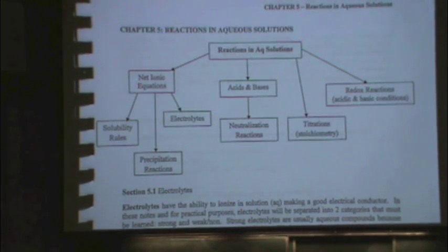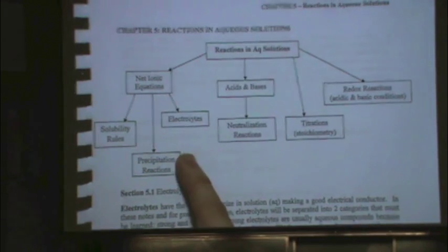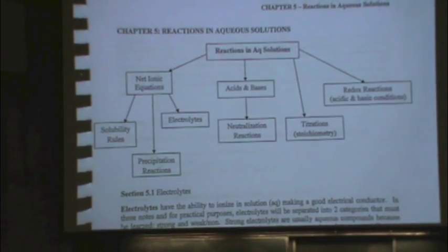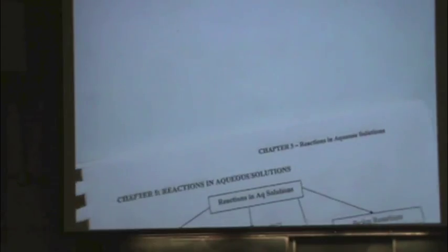What we're going to tackle first is the big monster on the left called net ionic equations. And that will involve electrolytes, solubility rules, and precipitation reactions. So first we're going to tackle what's called electrolytes.